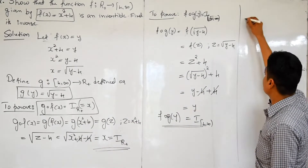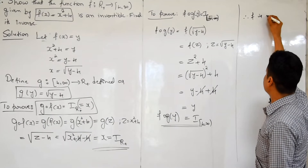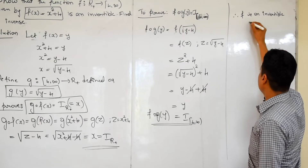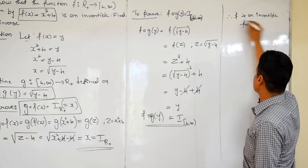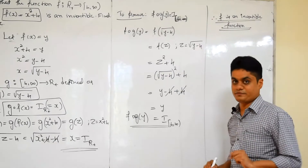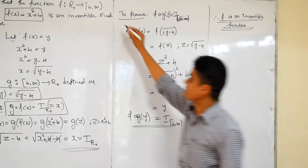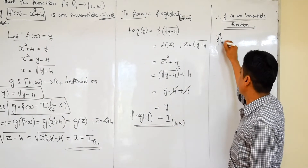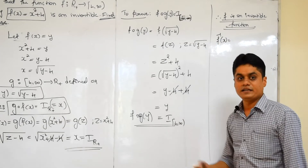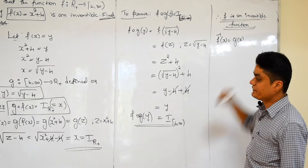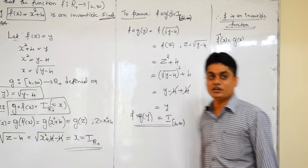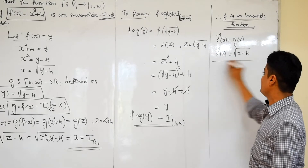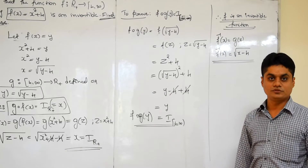Therefore f is an invertible function. The inverse is f⁻¹(x) = g(x) = √(x − 4). This question has also been asked three times in the final exam. The procedure is the same as the previous problem.